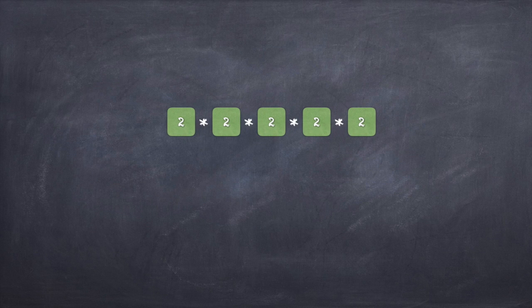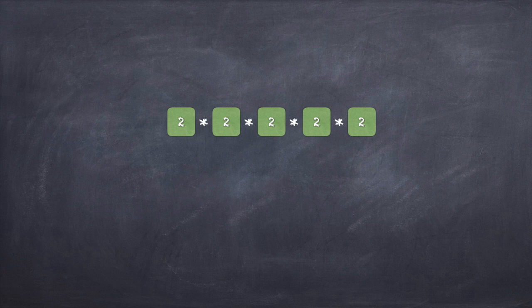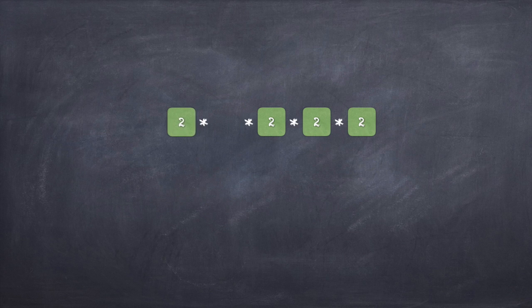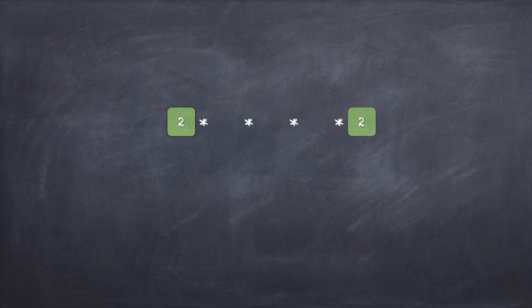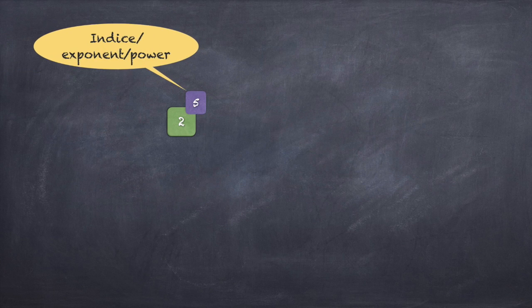Let's start with an example. Say in your calculations you end up needing to do 2 x 2 x 2 x 2 x 2, or 2 multiplied by itself 5 times. If it's only 5 times you can write it down and calculate the value as 32 — easy enough. But what if you had to do 2 x 2 a hundred times, or 10,000 times? That would occupy a lot of space. So is there a shorthand notation we can use to compress this information? Yes there is, and that sign is the index.